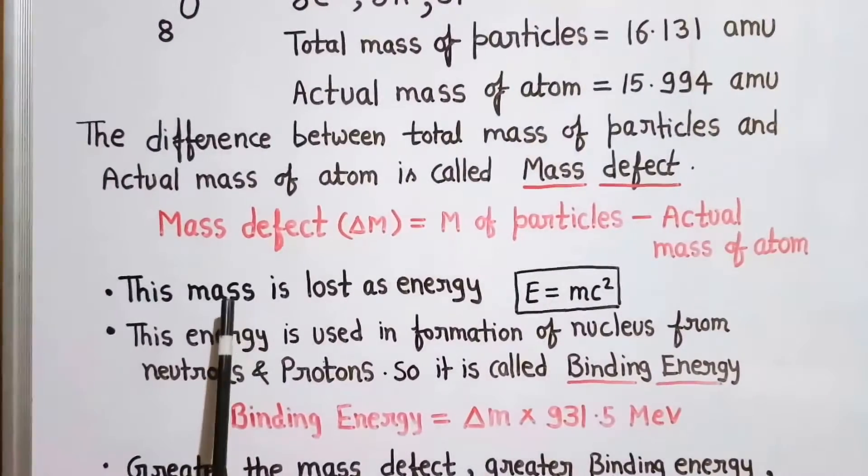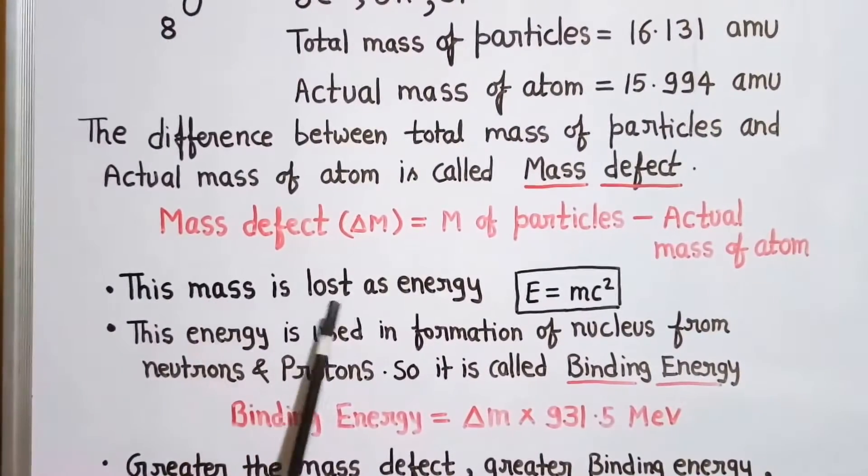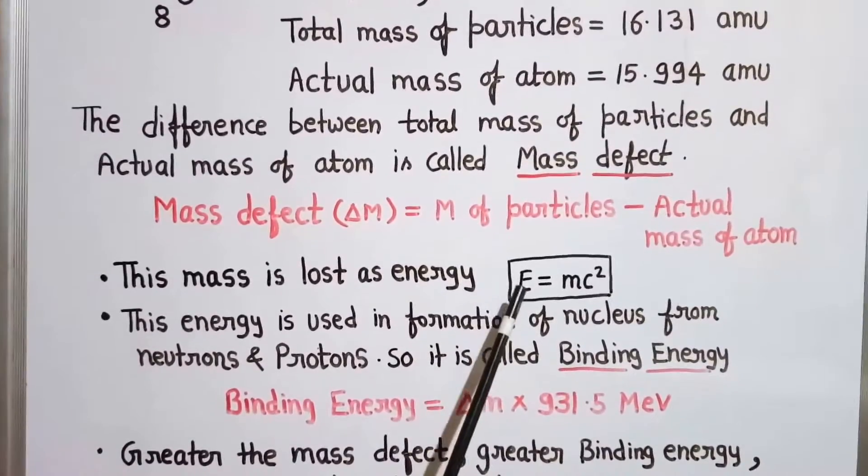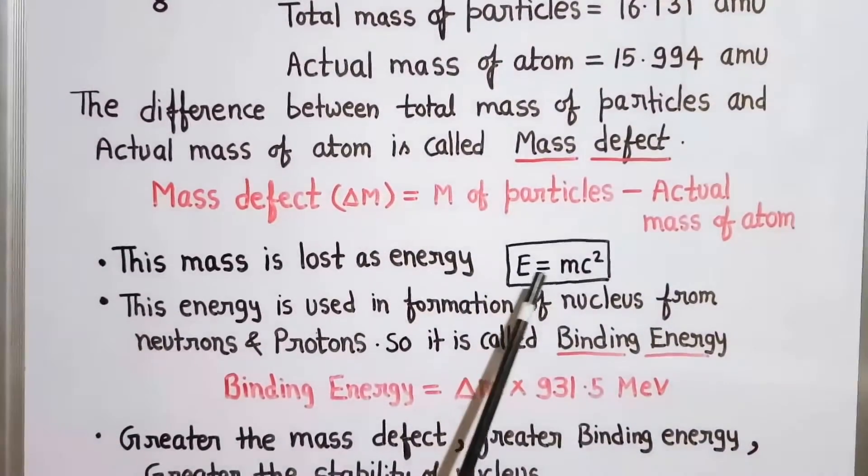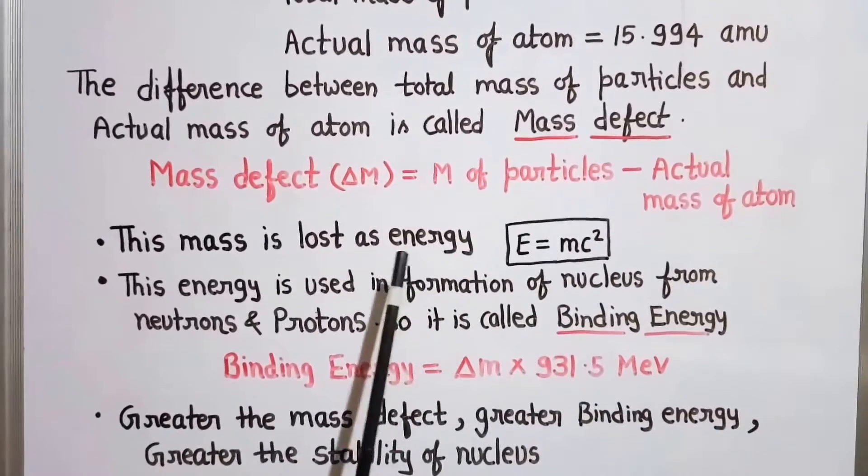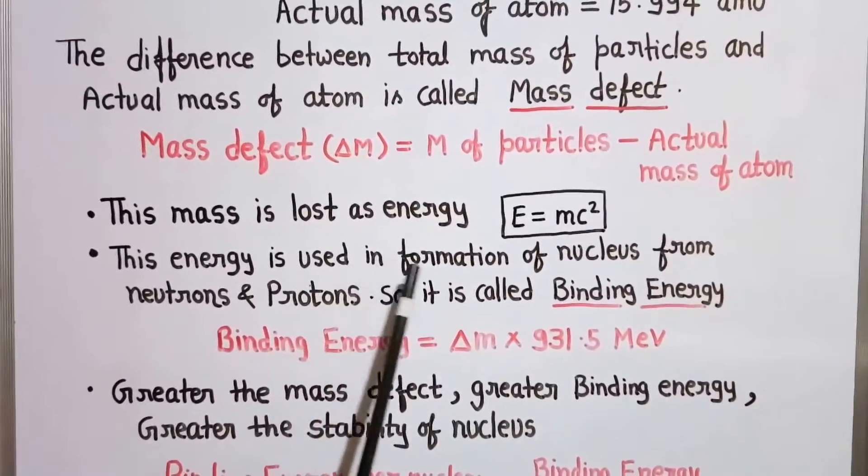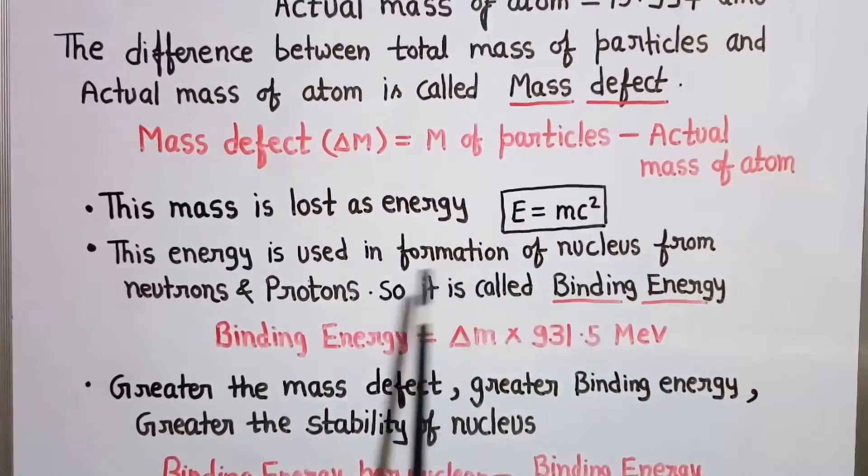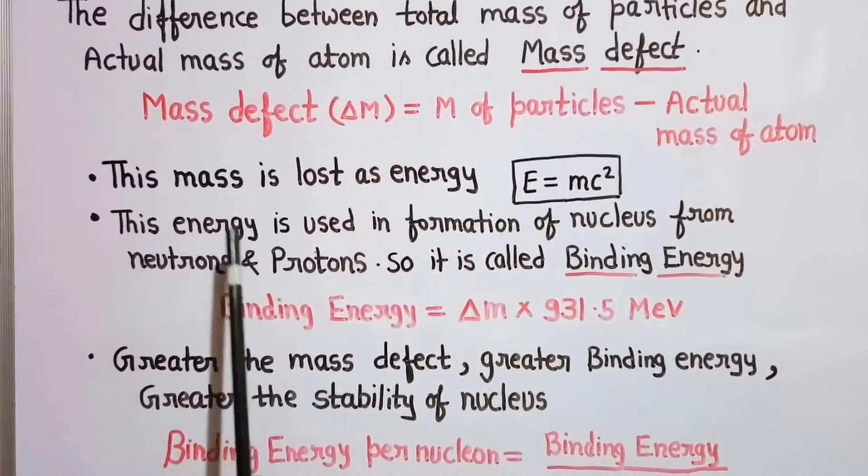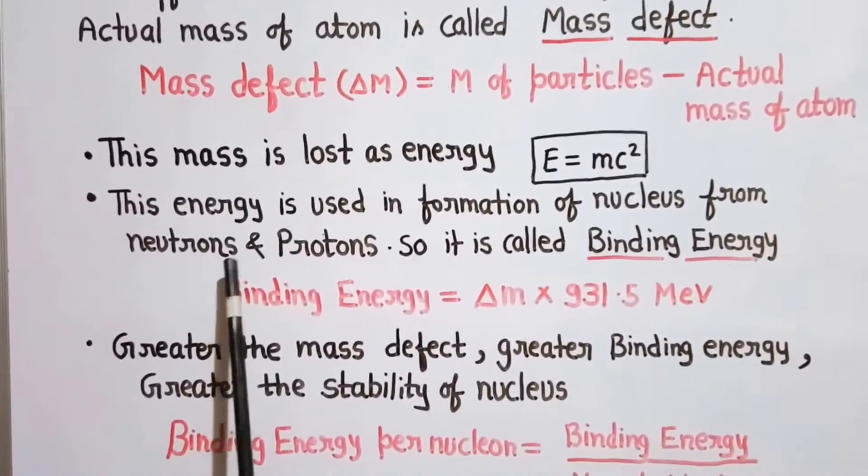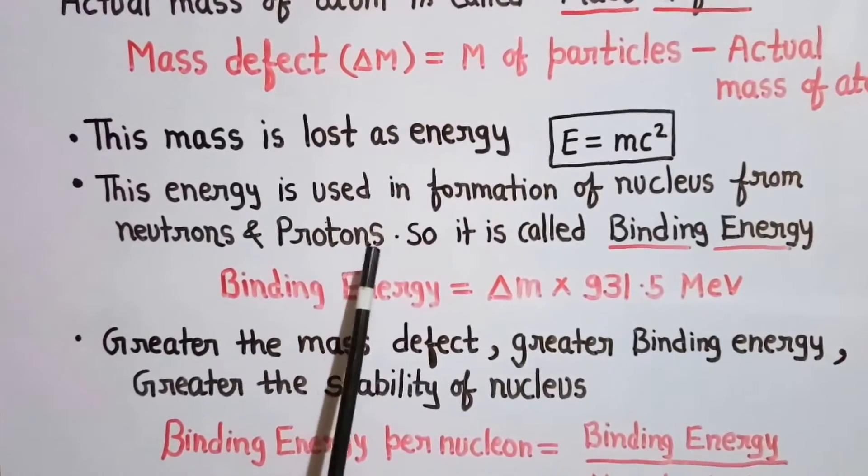What happens to this mass? This mass is lost as energy as it is denoted by the Einstein's law of energy and mass. And how is this energy used? This energy is used in the formation of nucleus from the neutrons and protons.